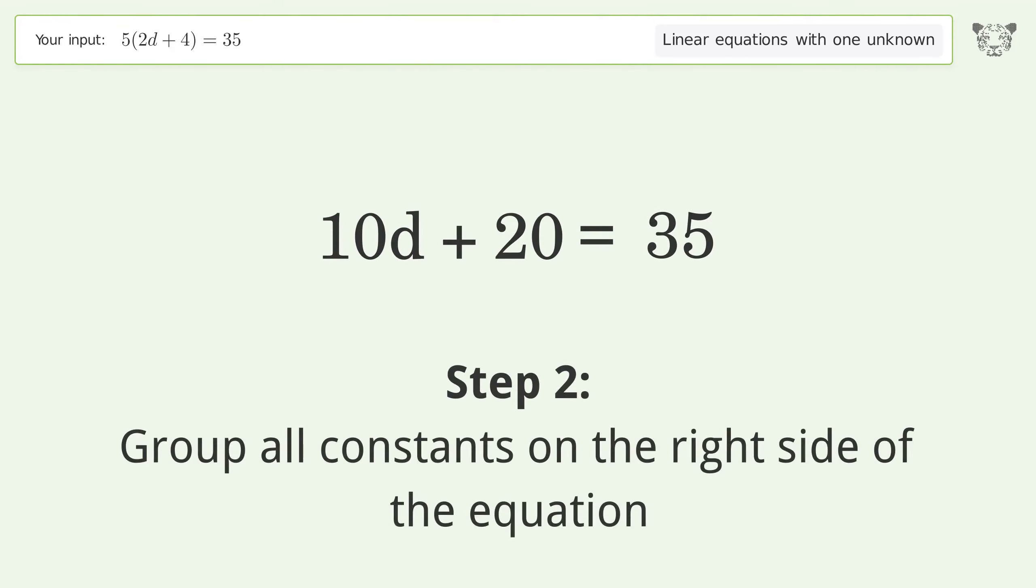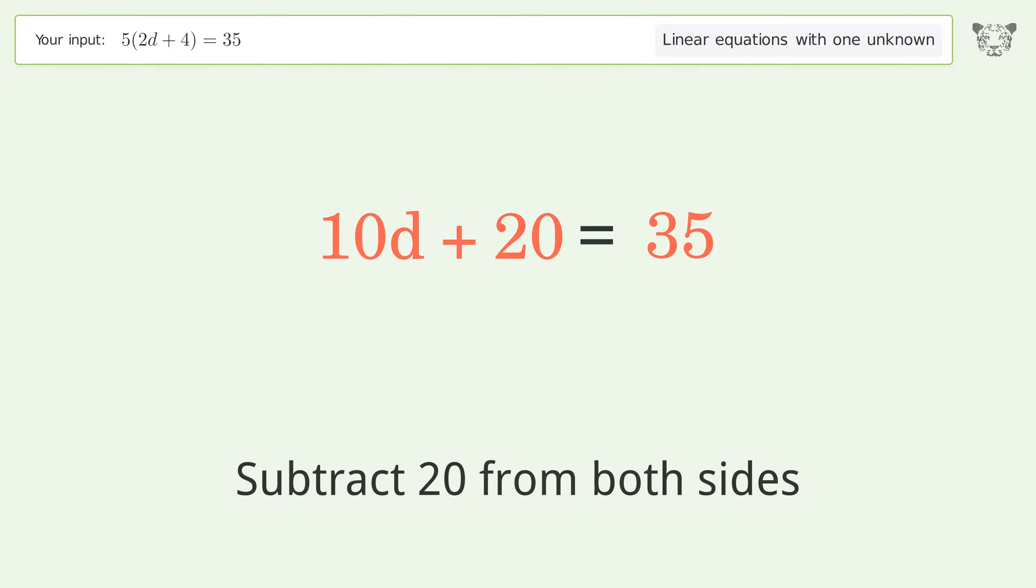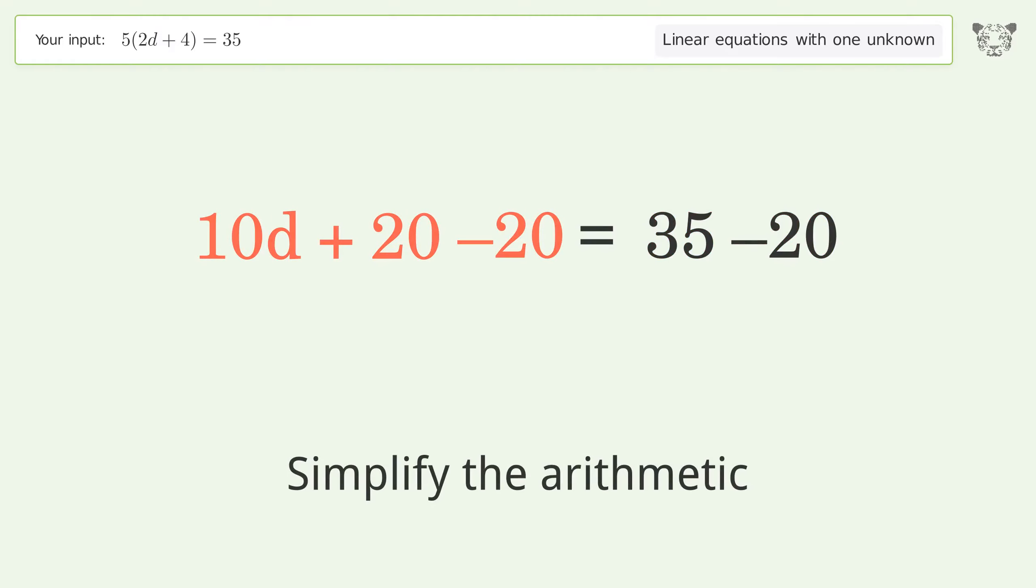Group all constants on the right side of the equation. Subtract 20 from both sides. Simplify the arithmetic.